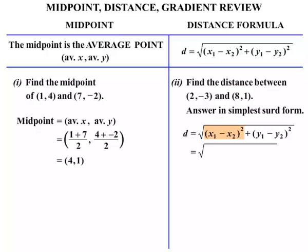Now X1 minus X2 — our X values are 2 and 8 — so we have (2 minus 8) squared, plus in the middle there, our Y values which are -3 and 1, so we write (-3 minus 1) squared. On the calculator, leaving the square root out of it, we do (2 minus 8) squared plus (-3 minus 1) squared. We work that out and get 52.